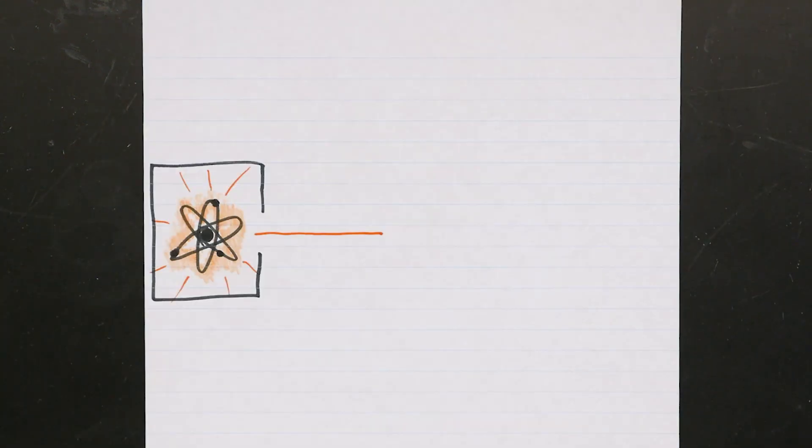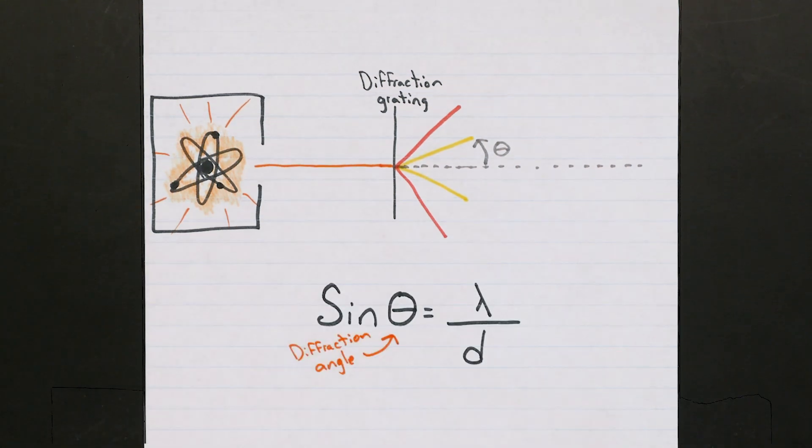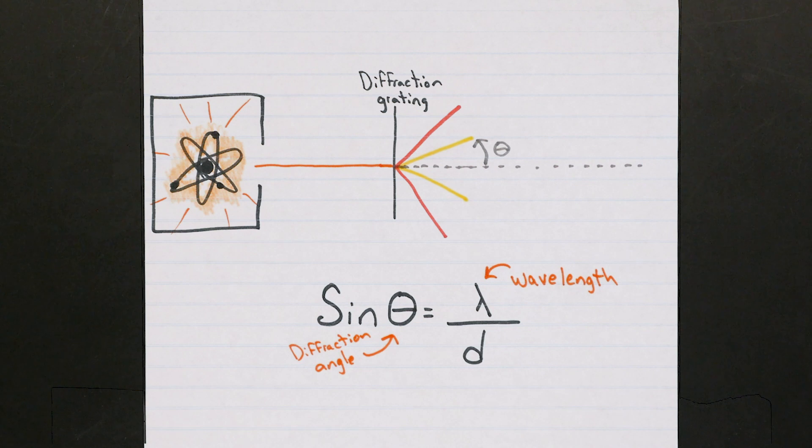So if we can induce a chemical sample of atoms to emit light, we can use a diffraction grating to look for which specific wavelengths of photons are actually emitted. The exact angle that a specific photon is diffracted is related to the wavelength of that photon by this formula, where the sine of the diffraction angle is equal to the photon wavelength divided by the d value for the diffraction grating. More on that later.